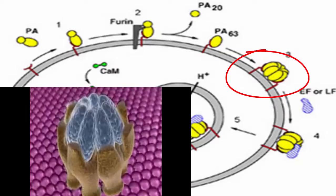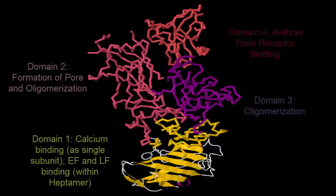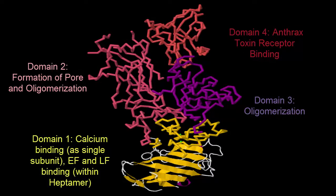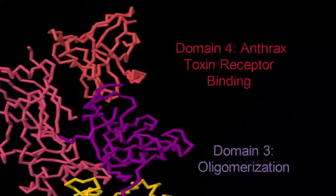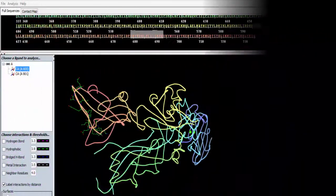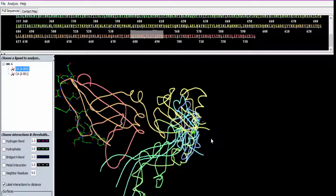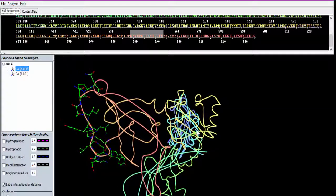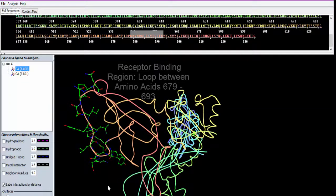Let's take a look at the structure of a single PA subunit. It is organized into anti-parallel beta sheets with four distinct domains. The two critical domains for binding are one and four. Domain four is the carboxy terminal domain that binds to the ATR receptor. Mutating a small flexible loop of domain four by introducing alanine substitutions results in a lower affinity to the ATR receptor. This sequence of amino acids represents the receptor binding region of the protective antigen.